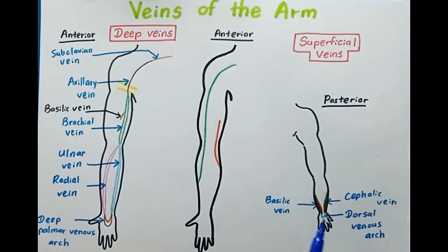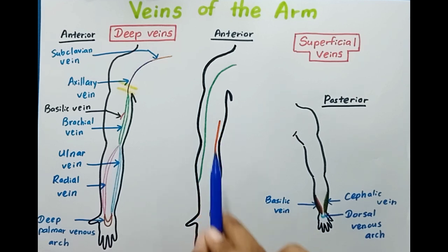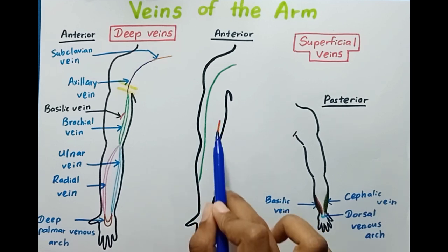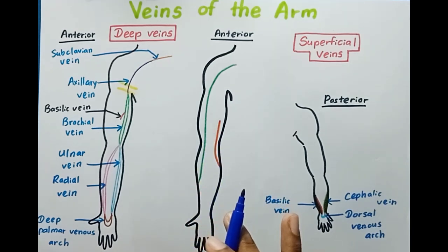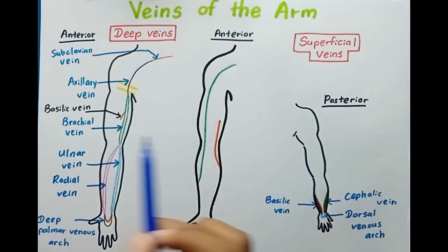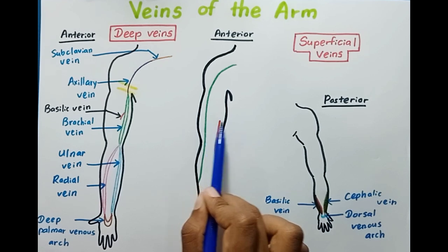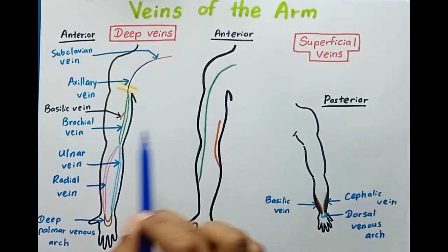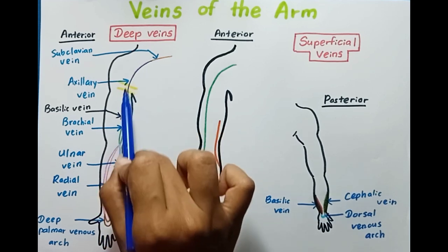The basilic vein starts from the back side of the arm, moves to the front side, and ascends along the medial side of the arm. Near the elbow, this basilic vein pierces the deep fascia to enter the deep venous system, joining with the brachial vein to form the axillary vein.